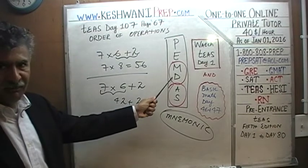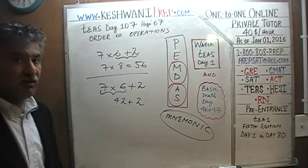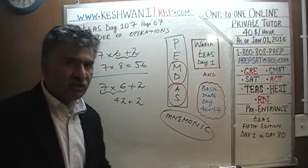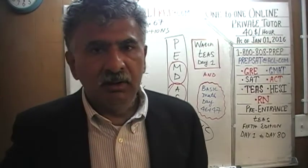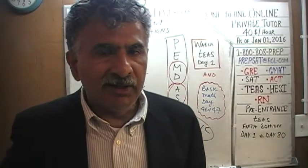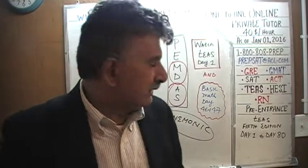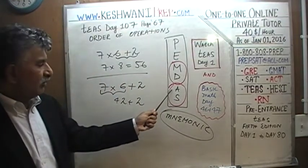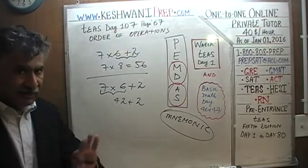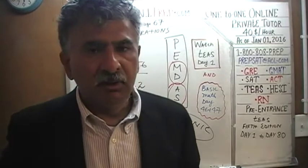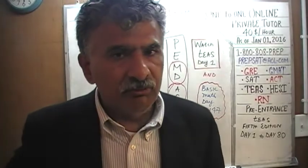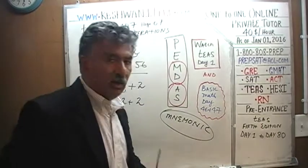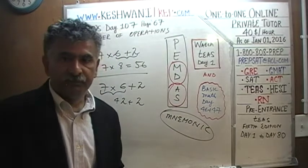Notice how I keep reading multiplication and division together, and addition and subtraction together. There is a reason for it. When you have multiplication and division together in the same expression, the rule is you must go from left to right. Similarly, when an expression involves only addition and subtraction, the rule is again to go from left to right.